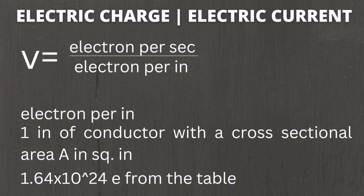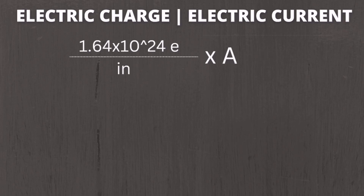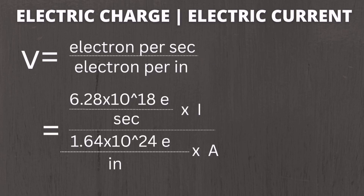Electrons per inch is derived from 1 inch of conductor with cross-sectional area A in square inches. Each cubic inch of copper contains 1.64 times 10 raised to 24 electrons from the table. This can be written as 1.64 times 10 raised to 24 electrons per cubic inch multiplied by area A. Since area is in square inches, square inches cancel out, giving 1.64 times 10 raised to 24 electrons per inch.